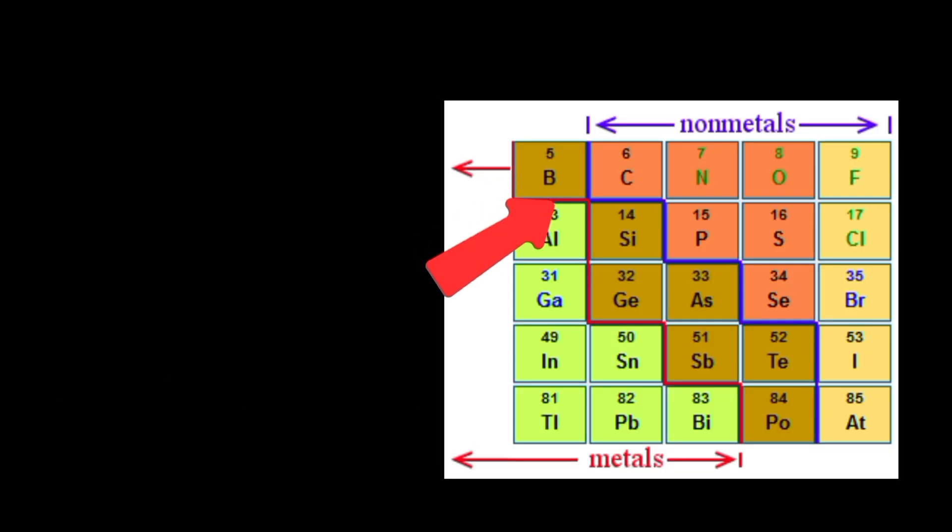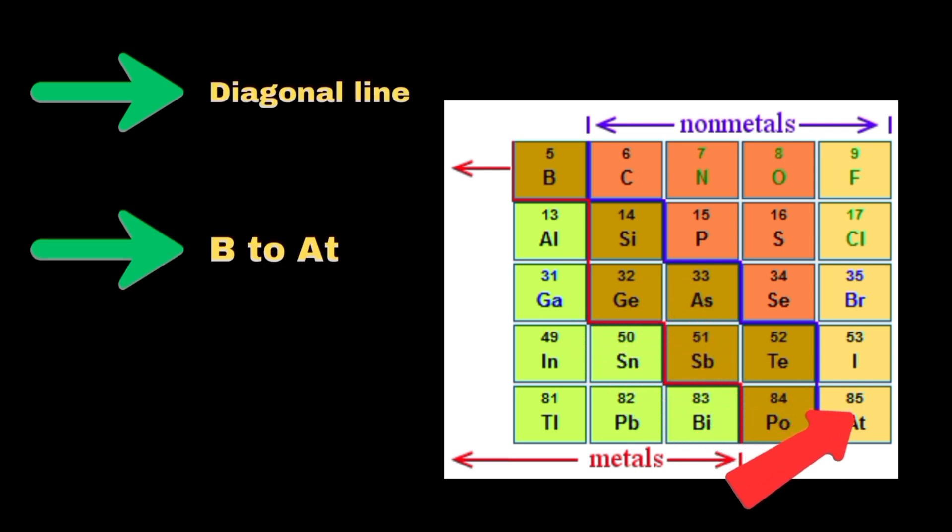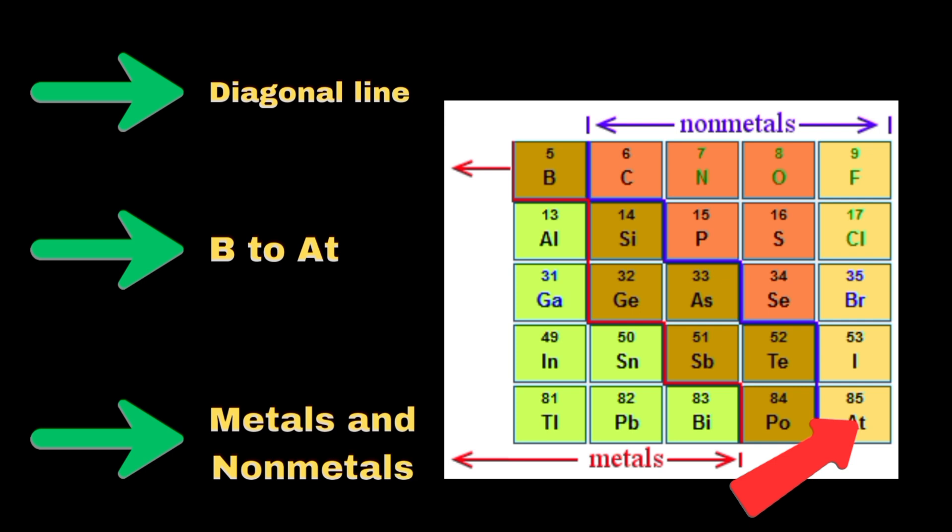Metalloids lie between metals and non-metals, forming a diagonal line from boron to astatine. They have properties of both metals and non-metals, making them useful in semiconductors.